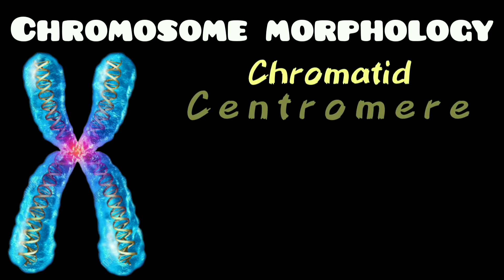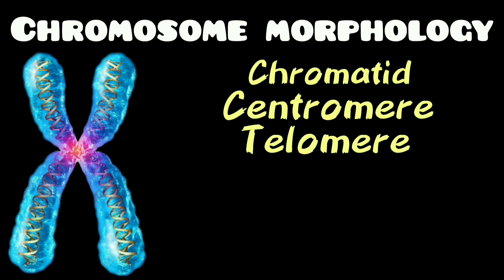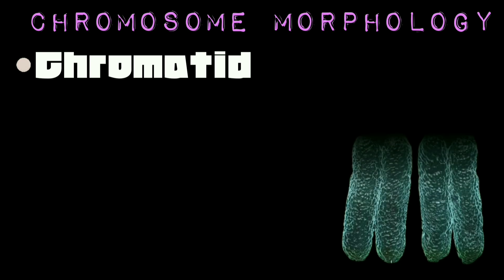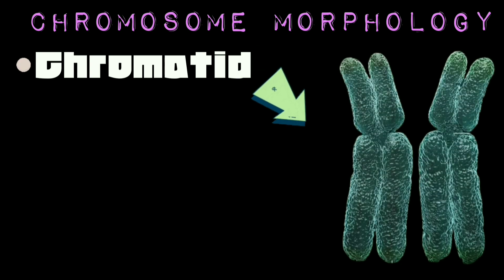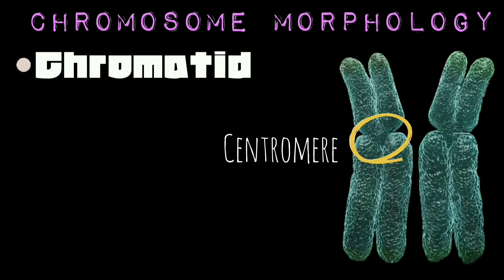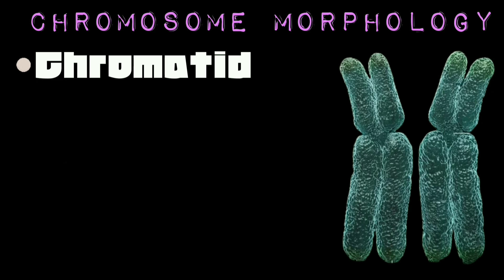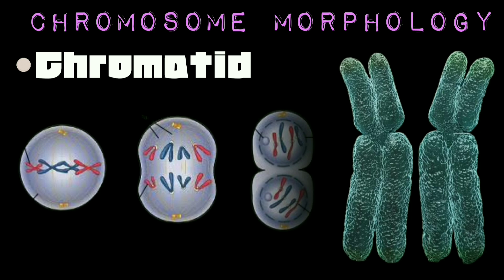The structural features include: chromatid, centromere, telomere, secondary constriction and satellite, and chromomere. Each metaphase chromosome appears to be longitudinally divided into two identical parts, each of which is known as a chromatid. The two chromatids of a chromosome are held together closely at a point called the centromere. The two chromatids separate during mitotic anaphase or during anaphase II of meiosis and move to the opposite poles. As a consequence, each chromosome is represented by a single chromatid during telophase.